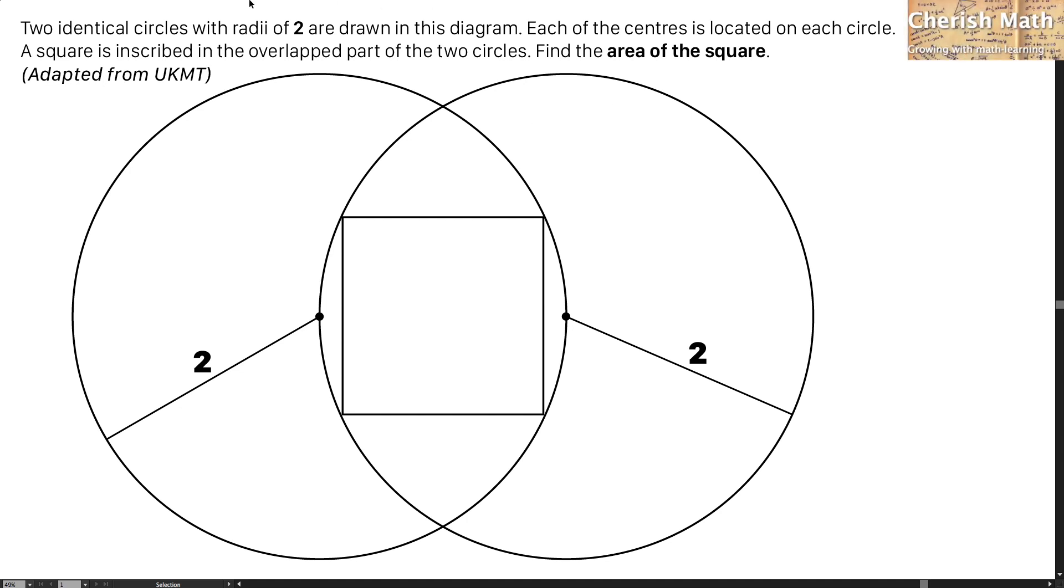Say hi from Chavish Math. Here is the question. Two identical circles with radii of 2 are drawn in this diagram. Each of the centers is located on each circle. A square is inscribed in the overlap parts of the two circles. Find the area of the square. This question is adapted from UKMT.